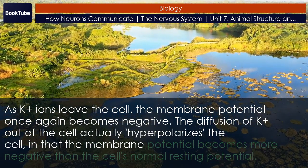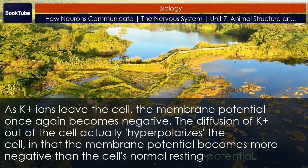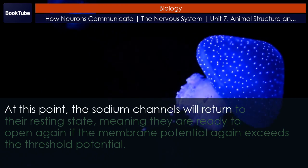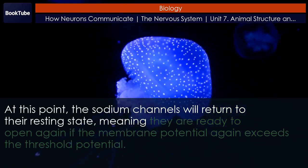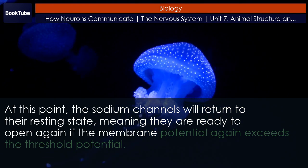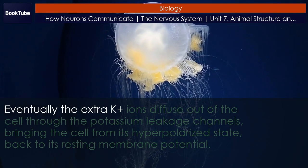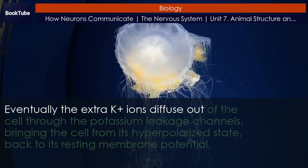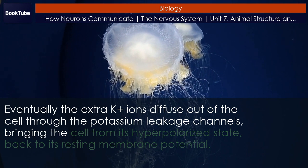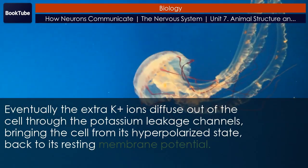The membrane potential becomes more negative than the cell's normal resting potential. At this point, the sodium channels will return to their resting state, meaning they are ready to open again if the membrane potential again exceeds the threshold potential. Eventually the extra K+ ions diffuse out of the cell through the potassium leakage channels, bringing the cell from its hyperpolarized state back to its resting membrane potential.